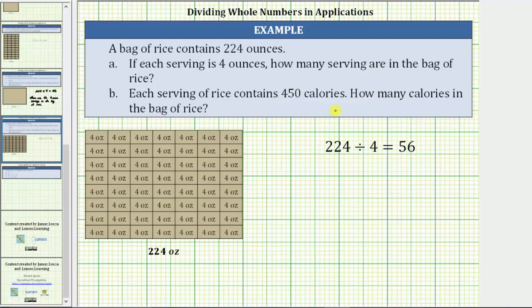Which means to determine the total number of calories in the bag of rice, we need to multiply 56 by 450.